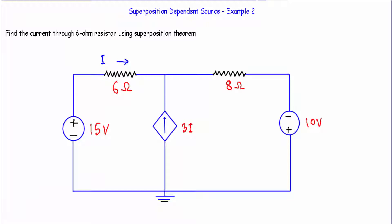This is my second example of a circuit containing a dependent source where I have to use the superposition theorem. We have to calculate the current through the 6 ohm resistor. This circuit contains two independent voltage sources, 15 volt and 10 volt, and a current dependent current source.